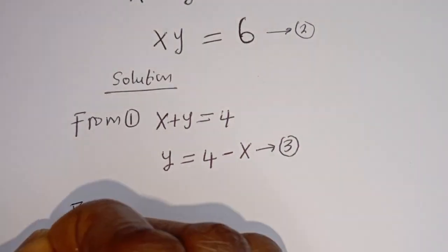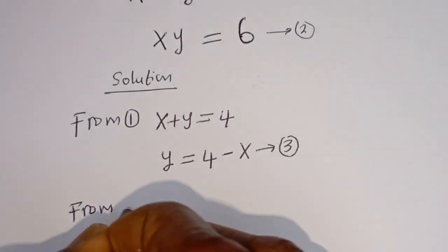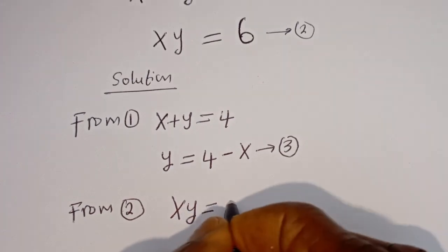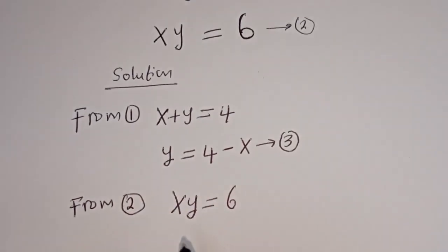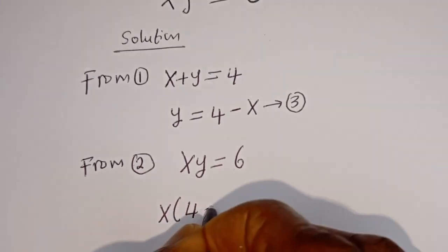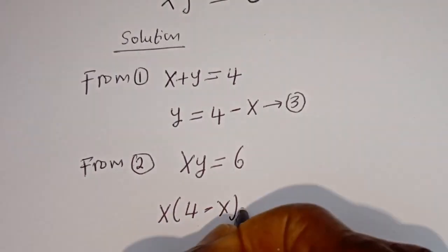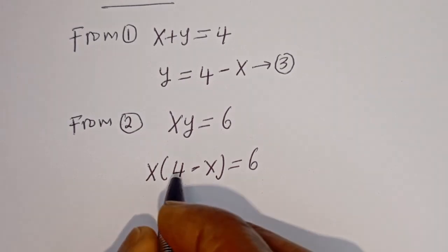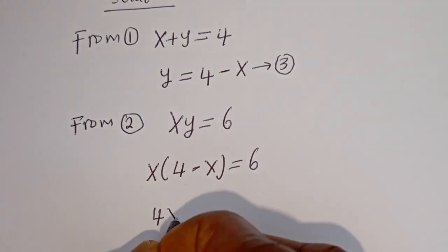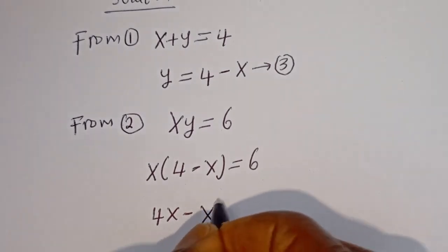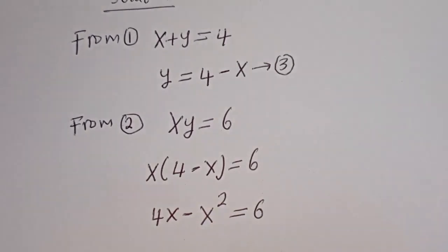Also from equation 2, x times y is equal to 6. Let's substitute for y here. We have x times (4 minus x) is equal to 6. Let's open this bracket: x multiplied by 4 is 4x, minus x multiplied by x, which is x squared, is equal to 6.